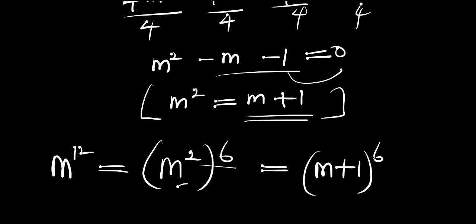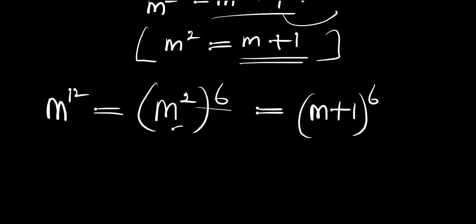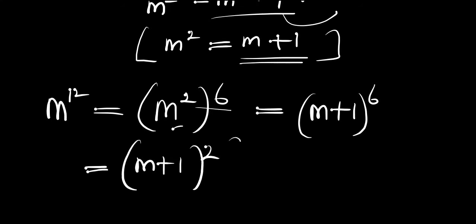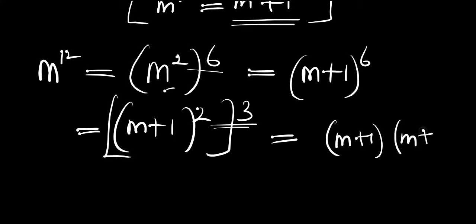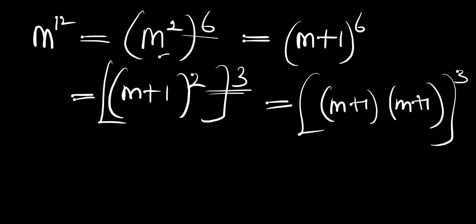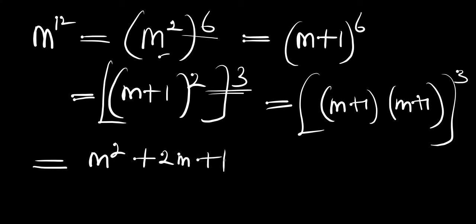We can rewrite (m plus 1) to the power of 6 as [(m plus 1) squared] to the power of 3, because 2 times 3 equals 6. Expanding (m plus 1) squared gives us m squared plus 2m plus 1, and this is raised to the power of 3.